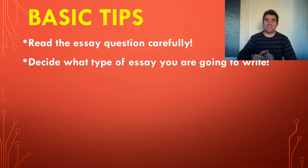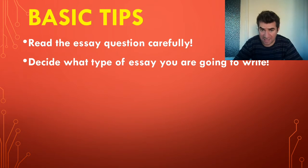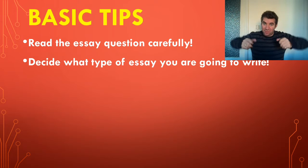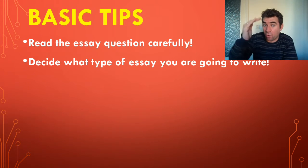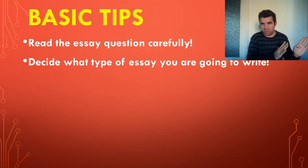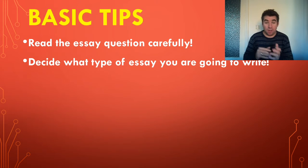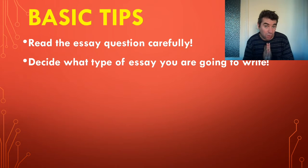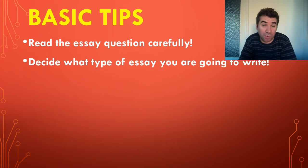Decide what type of essay you're going to write. Basically there are two types: a discursive essay, where you're just discussing one point, and an argumentative essay, where you're looking at both sides — the arguments for and against something. Some essays will clearly be discursive, some will obviously be argumentative, and others really depend on your point of view. You need to decide which one you've got more ideas for.